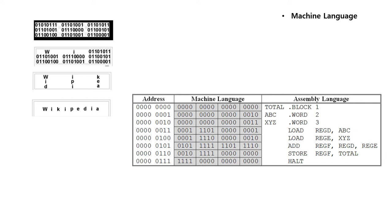In a fixed width binary code, each letter, digit, or other character is represented by a bit string of the same length. That bit string interpreted as a binary number is usually displayed in code tables in octal, decimal, or hexadecimal notation. There are many character sets and many character encodings for them.